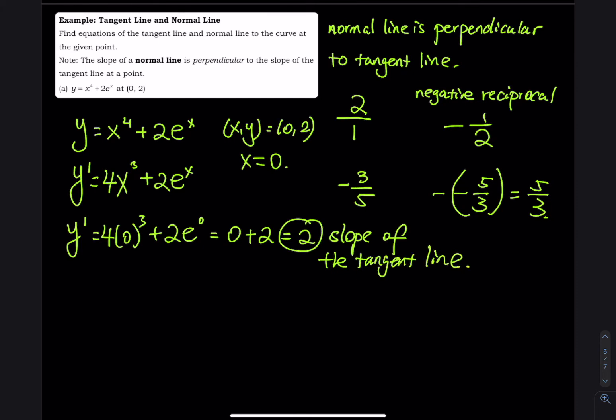You have a point, you have a slope, you can easily build the tangent line, so y minus y1 equals slope times x minus x1. So you have y equals 2x plus 2, that is the equation of the tangent line.